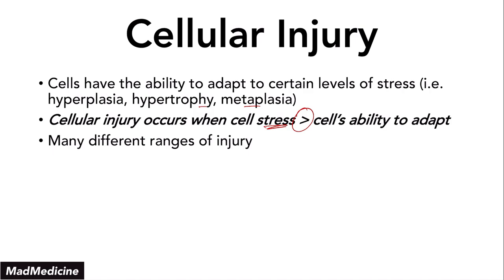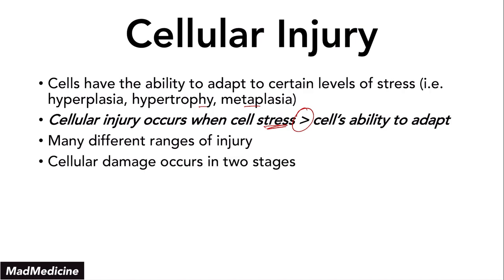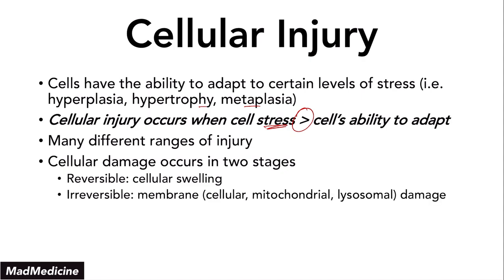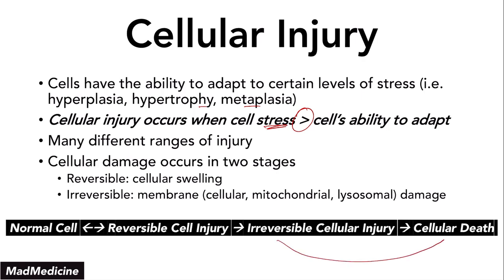There are many different ranges of injury — you can watch our video on cell injury for a better understanding — but one thing you do need to know is that this process usually occurs in two main stages. The first stage is the reversible stage where you see cellular swelling. The second stage is irreversible, where you have membrane damage not just of the cell, but also of the lysosomes and the mitochondria. Once you get to the irreversible stage, you are going to progress to cell death. This is the central dogma of cell injury.